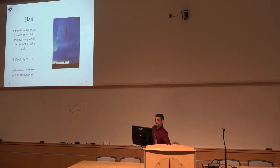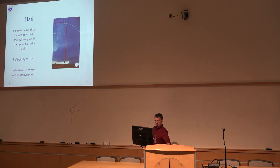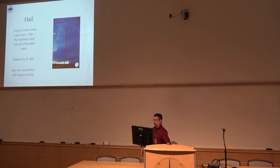The shear is pushing everything out. The hail may still form up there, but if it has to come back down through the warm updraft, it's going to underperform. Hail will overperform with mesocyclones.